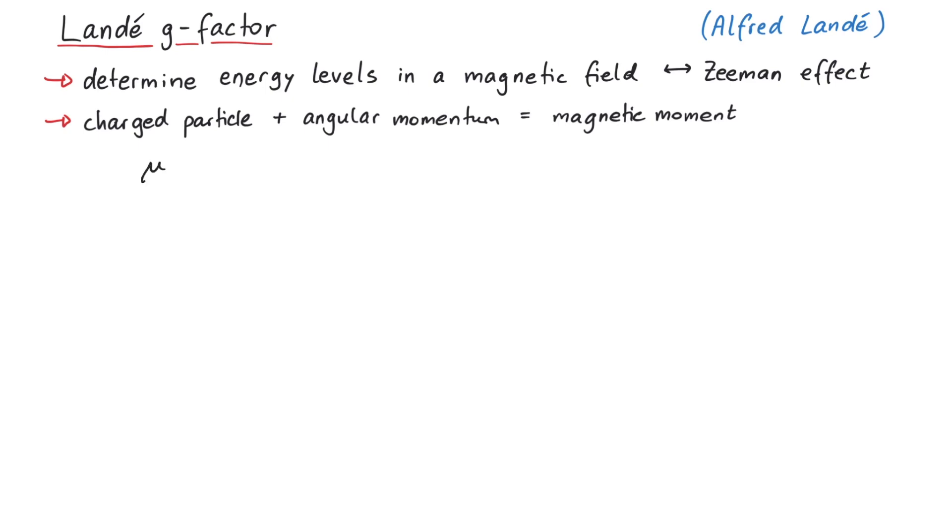This magnetic moment can generally be written as a g-factor, a magneton, and the corresponding angular momentum. A g-factor depends on the kind of particle as well as the type of angular momentum.